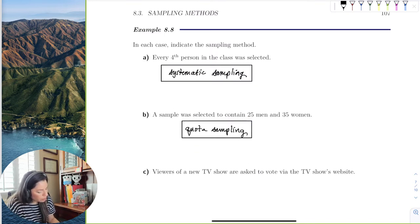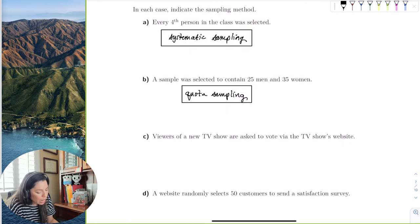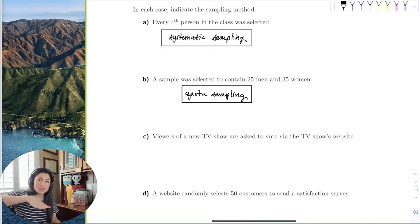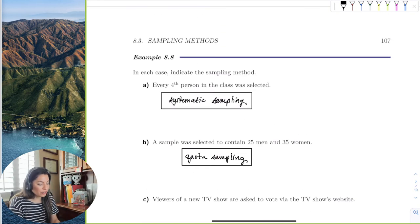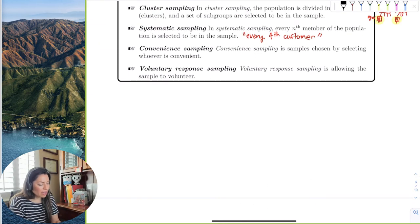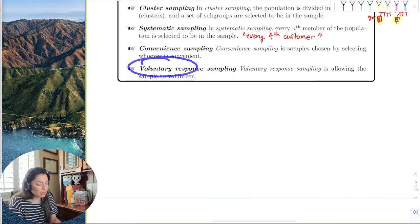Viewers of a new TV show are asked to vote via the TV show's website. So we can think of American Idol. So just because you're watching the TV show, does that mean that you're going to vote? No, I wouldn't. I watched American Idol and sometimes I would vote and sometimes I wouldn't. It just depends how I felt. So it's really up to the viewers. It's up to the subjects in your study to volunteer. And that was the voluntary response sampling.